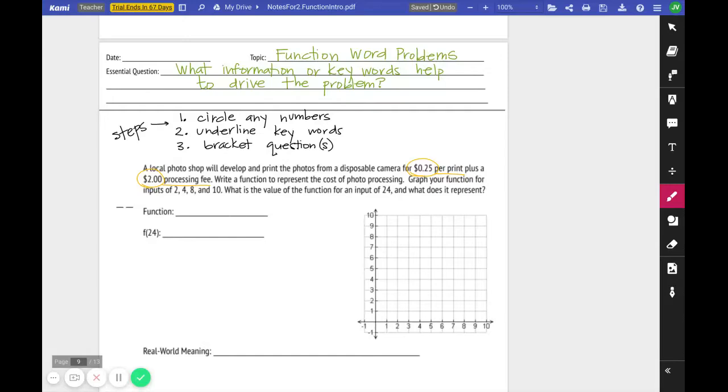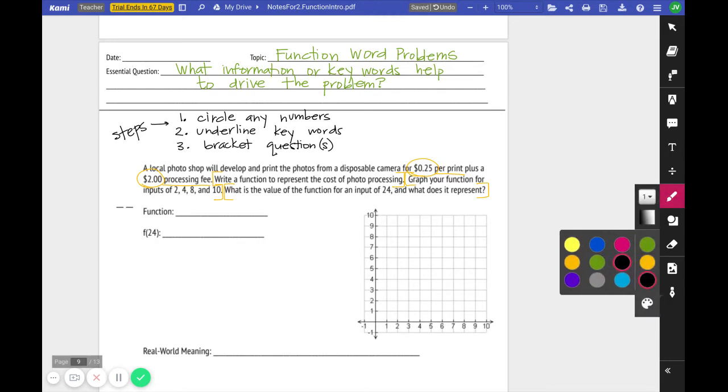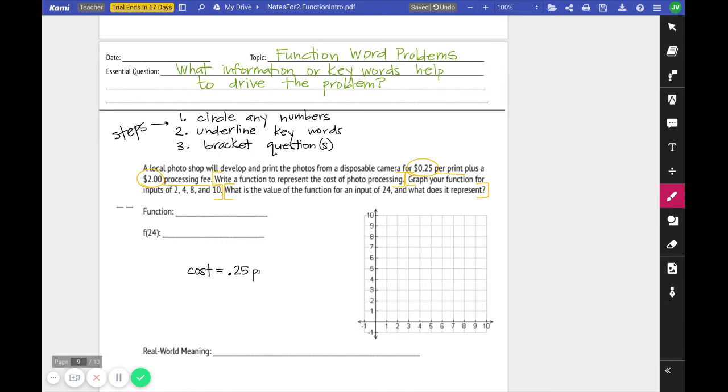Question. Write the function to represent the cost of the processing. Next question. Graph your function for some inputs. Next question. What is the value for an input of 24 and what does it represent? So the first question being asked is, how do we determine the cost? So the cost is $0.25 for every picture plus $2 as a processing fee.